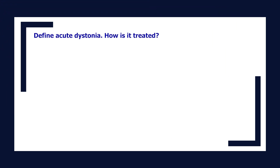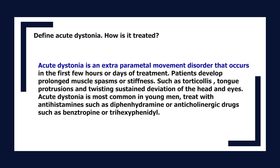Define acute dystonia and how it is treated. Acute dystonia is an extrapyramidal movement disorder that occurs in the first few hours or days of treatment. Patients develop prolonged muscle spasms or stiffness such as torticollis, tongue protrusions, and twisting sustained deviation of the head and eyes. Acute dystonia is most common in young men. Treat with antihistamines such as diphenhydramine or anticholinergic drugs such as benztropine or trihexyphenidyl.